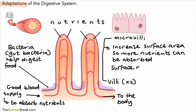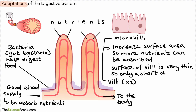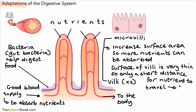One final adaptation is that the surface of the villi is very thin. That means there's only a short distance for the nutrients to travel to get into the blood, which makes it easier and quicker to absorb those nutrients.